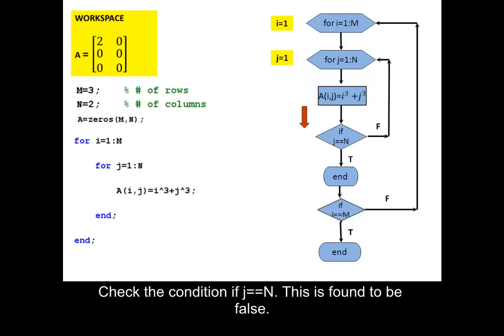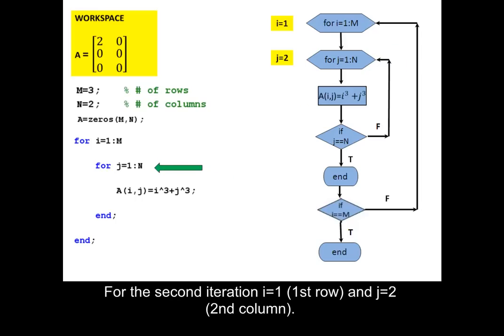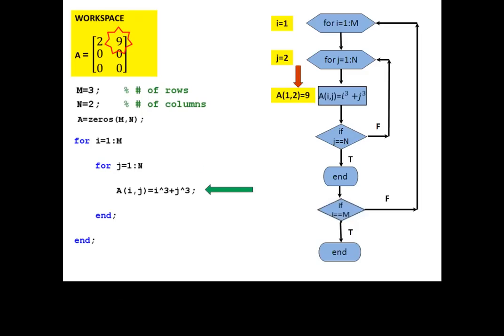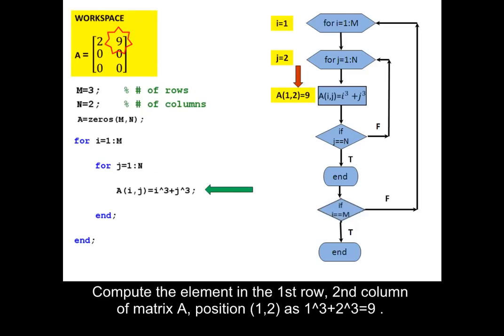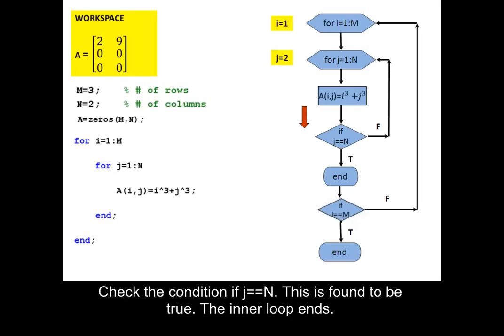Check the condition: if J is equal to N, this is found to be false. Return to the beginning of the inner loop. For the second iteration I equals 1, first row, and J equals 2, second column. Compute the element in the first row, second column of matrix A, position (1,2), as 1 cubed plus 2 cubed equals 9. Check the condition: if J is equal to N, this is found to be true. The inner loop ends.